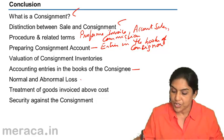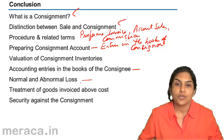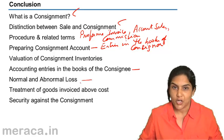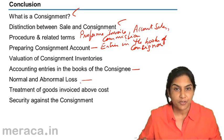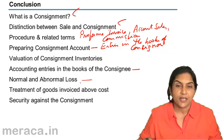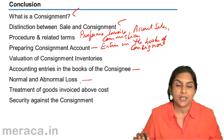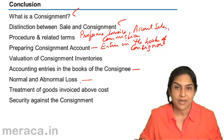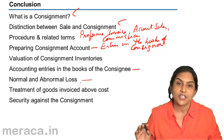We then distinguished between normal and abnormal loss and also the accounting treatment for each. Abnormal loss is valued in a similar manner to that of the closing stock, and it is credited to the consignment account. The effect of abnormal loss is removed from the consignment account so that the consignment account reflects normal profits.